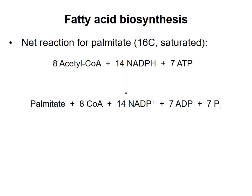The net reaction for synthesis of palmitate is shown. It takes seven cycles of the four reactions to produce palmitate. In the first cycle, two acetyl groups are joined to make a 4-carbon unit. After the second cycle, we have a 6-carbon unit, and so on. In the seven cycles, 14 molecules of NADPH and 7 molecules of ATP are consumed.